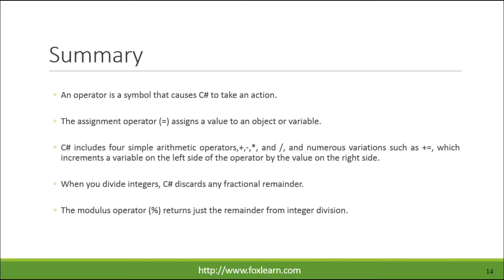An operator is a symbol that causes C# to take an action. The assignment operator (=) assigns a value to an object or variable. C# includes four simple arithmetic operators: +, -, *, and /, and numerous variations such as +=, which increments a variable on the left side by the value on the right side. When you divide integers, C# discards any fractional remainder. The modulus operator (%) returns just the remainder from integer division.